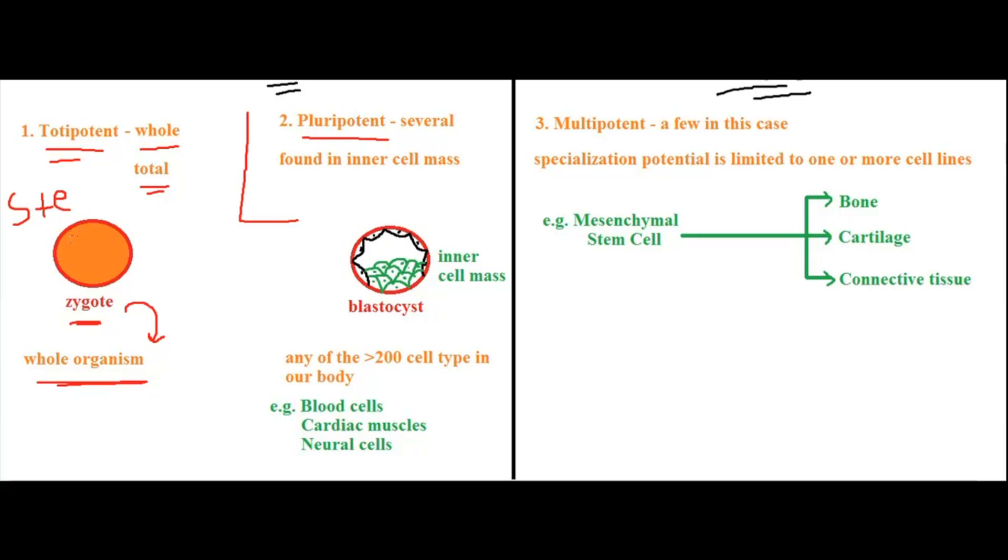This ability of a zygote to differentiate into any type of cell, or to make the whole organism, is called totipotency. That means a zygote is a totipotent cell because it can give rise to the whole organism. That's where total comes in—it can give rise to a complete organism.